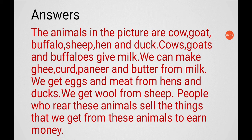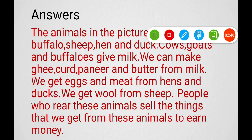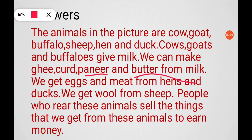We can make ghee, curd, paneer, and butter from milk. We get eggs and meat from hens and ducks. We get wool from sheep. People who rear these animals sell the things they get from these animals to earn money.